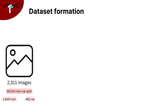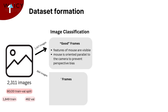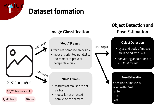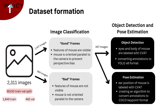First, I had to procure and annotate images of mice for my dataset. Thanks to the help from the Simone laboratory, I was able to gather over 2,000 images. I then sorted these images into good and bad frames for the image classification model. For 447 frames, I labeled the mouse's eye and body using CVAT, then placed key points at the mouse's nose, ear canal, and tip of its ear to determine ear rotation.